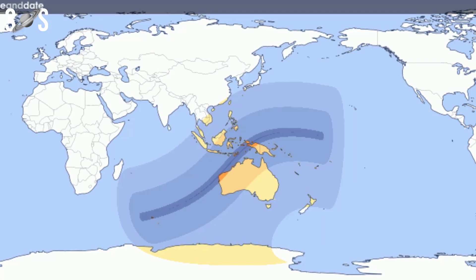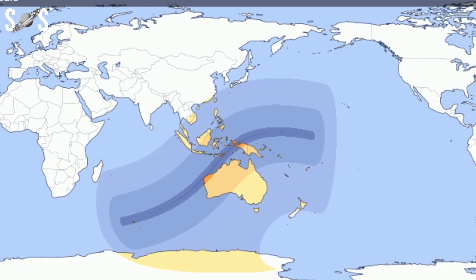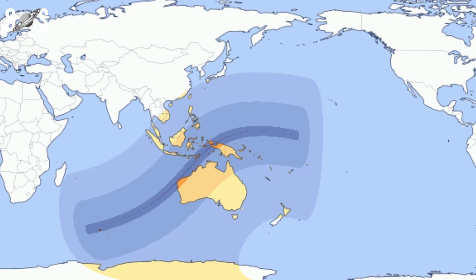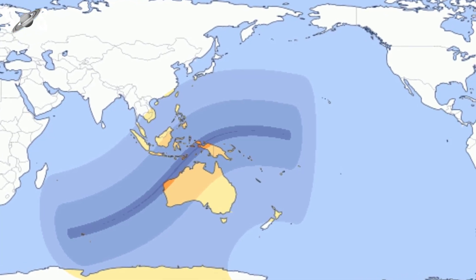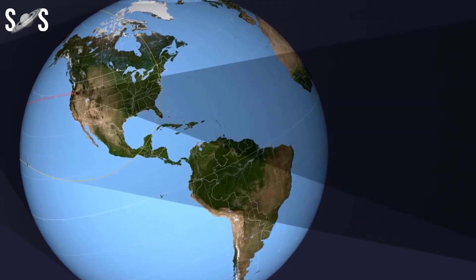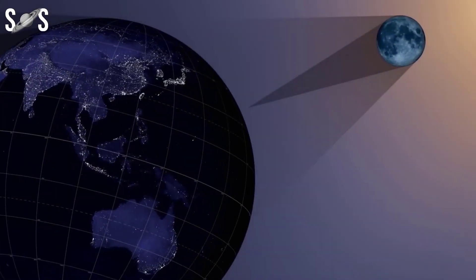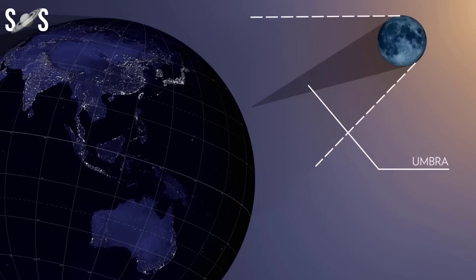The total phase of the eclipse will be visible from the east of East Timor, parts of West Papua, and the Exmouth Peninsula in western Australia. Hybrid solar eclipses involve all three areas of the moon's shadow and combine all three types of solar eclipses.